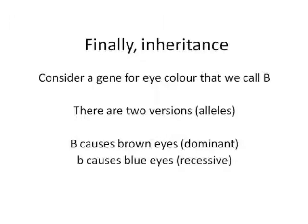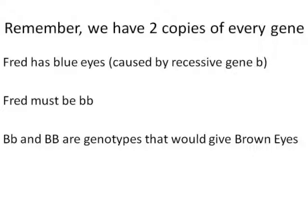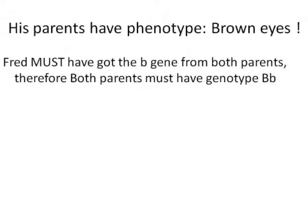Finally, we are going to have a question on inheritance. Consider a gene for eye colour that we will call B. There are two versions of the gene: big B causes brown eyes and little b causes blue eyes — it is recessive. Big B is dominant, which means if you have big B at all it will show. So we have this chap, Fred. He has blue eyes. That means he must have two copies of the recessive gene. If he had big B he would have brown eyes. So he has little b, little b. Both his parents have brown eyes, so Fred must have got the little b gene from his dad and the little b gene from his mum. Both parents must be big B, little b. The genotype must be big B, little b. Their phenotype — what you see — must be brown eyes.